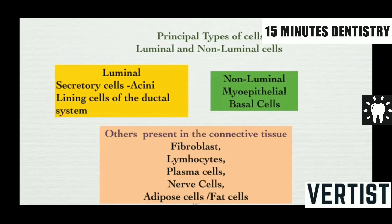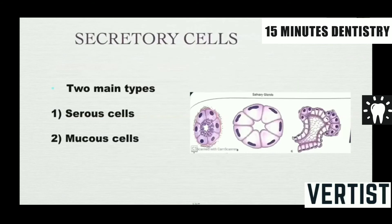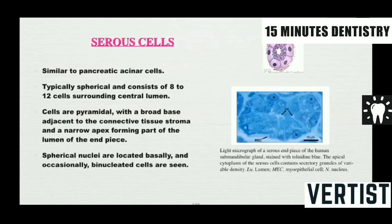Other cells are present in the connective tissue, including fibroblasts, lymphocytes, plasma cells, nerve cells, and adipose cells. The two main types of secretory cells are the serous cells and the mucous cells.